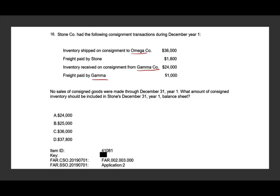I'm going to read all the questions just in case someone is listening while driving. No sales of consigned goods were made through December 31st, year one. What amount of consigned inventory should be included in Stone's December 31st balance sheet? So Stone shipped inventory on consignment to Omega: $36,000. If Stone shipped the inventory to Omega, that's his inventory. Therefore, the $36,000 is considered part of Stone's inventory.